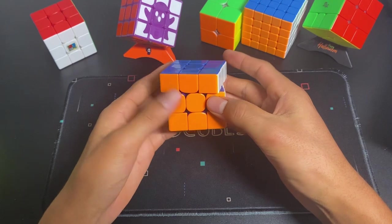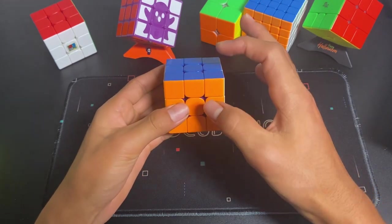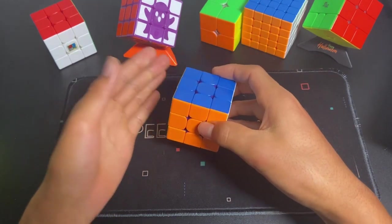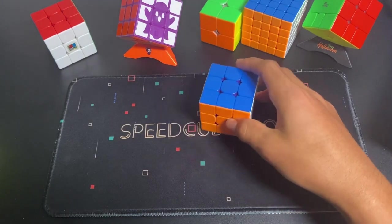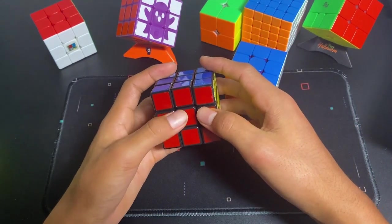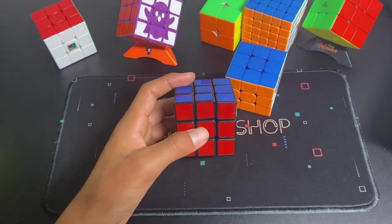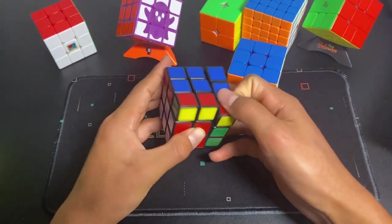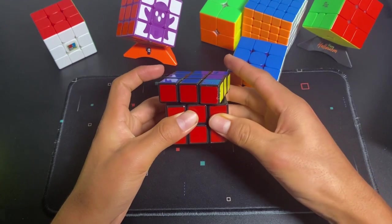And another big factor is to have a good cube. If you have something as bad as a Rubik's brand, which isn't really realistic if you're averaging 20 seconds, it won't be that good because the corner cutting isn't good.